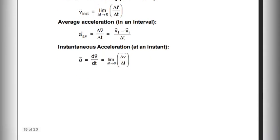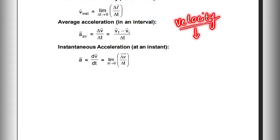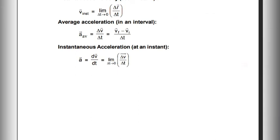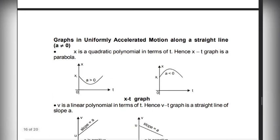If we take average acceleration, we work on the velocity — similar to how displacement is used for velocity. For instantaneous acceleration, you differentiate velocity: a = dv/dt. When you differentiate and solve as delta t tends to zero, you get the instantaneous acceleration.